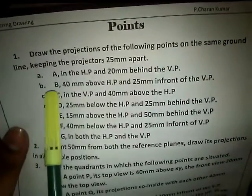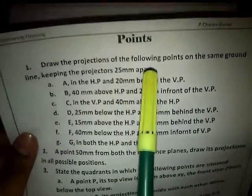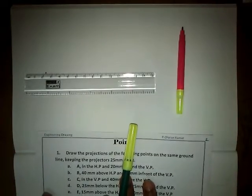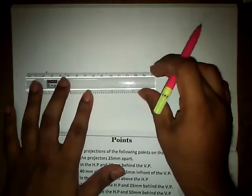The first point is point A, which is in HP and 20 mm behind the VP. So let us take down the position. Let us draw an XY reference line.